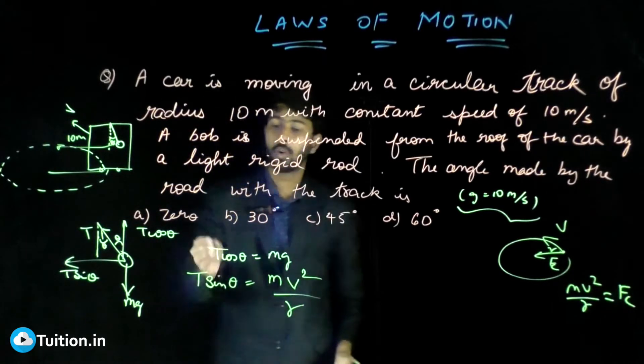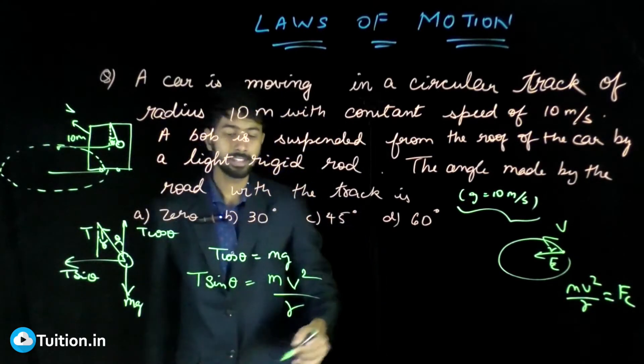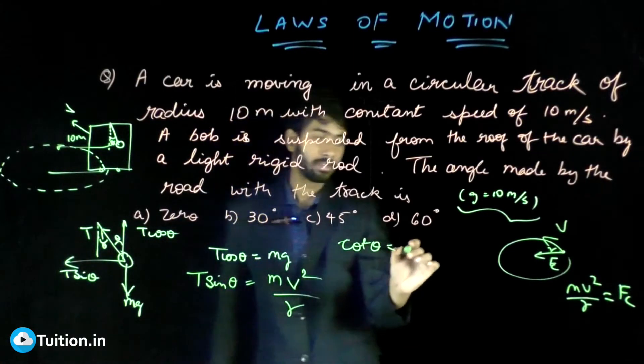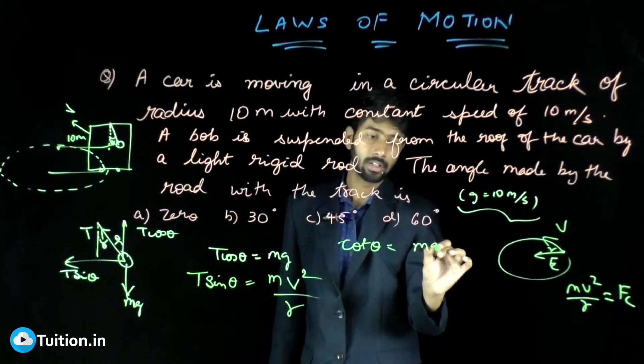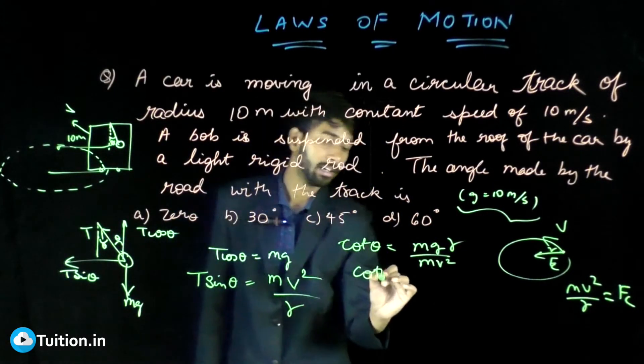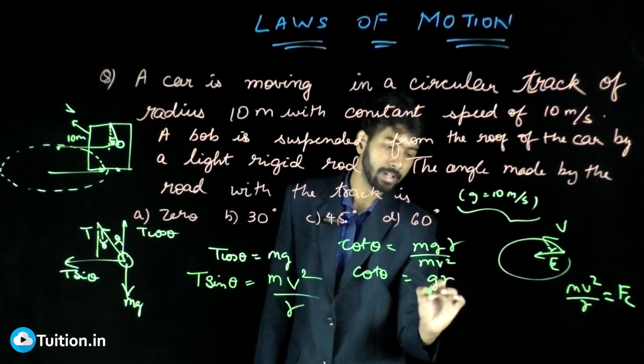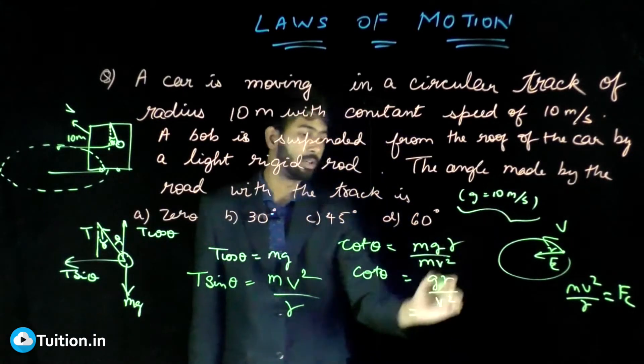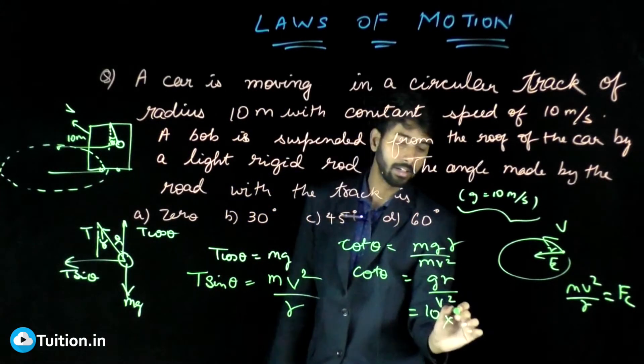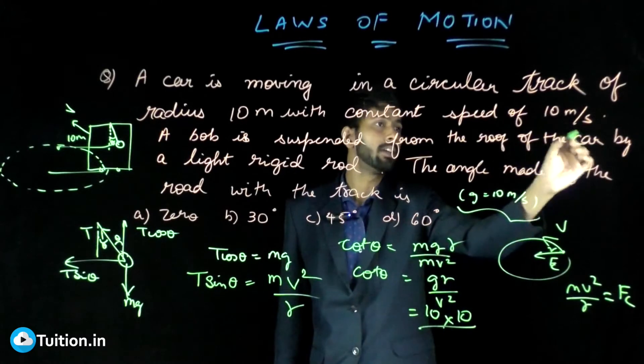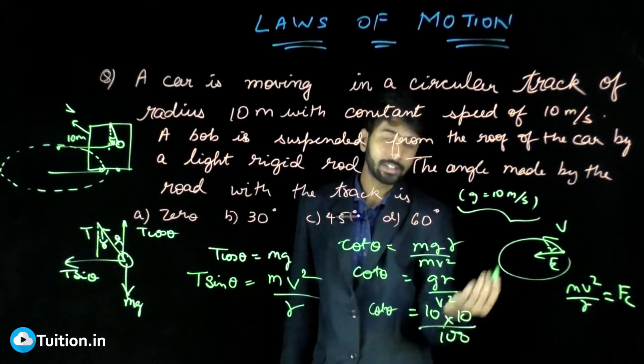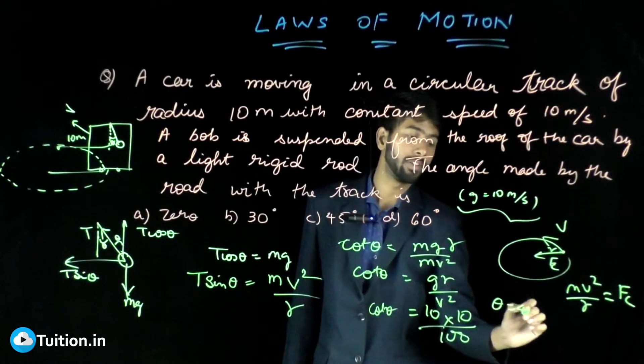If you need the angle now, you don't need the tension at all, so you can just divide. You'll simply get cot theta equals mg divided by mv²/r, which gives cot theta equals gr/v². You can take g equal to 10, r equals 10 meters, and V is also 10. So 10² is 100. This gives cot theta equal to 1, so theta has to be 45 degrees.